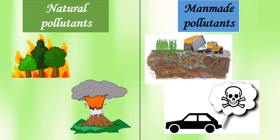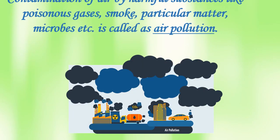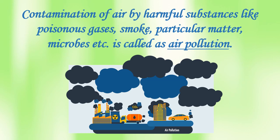Pollutants may be natural pollutants or man-made pollutants — a few examples are given on the screen. We will begin with air pollution. The contamination of air by substances like poisonous gases, smoke, particulate matter, microbes, etc., is called air pollution. When the air gets mixed with impure substances like poisonous gases and smoke, it is known as air pollution.